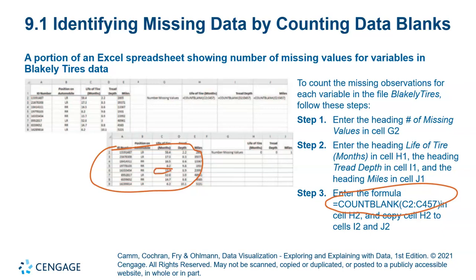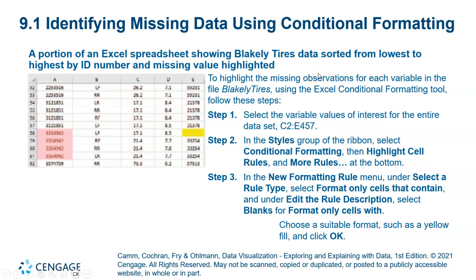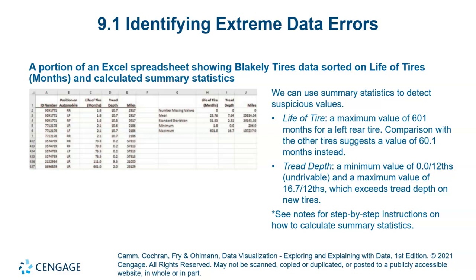If there are any empty spaces in between, the formula will calculate them for you — two empty spaces gives a total of two, three empty spaces gives three. If you want to mark them in different colors, you can go to Conditional Formatting, select a color such as yellow, and format only cells that are blank. This is a very interesting feature of Excel.